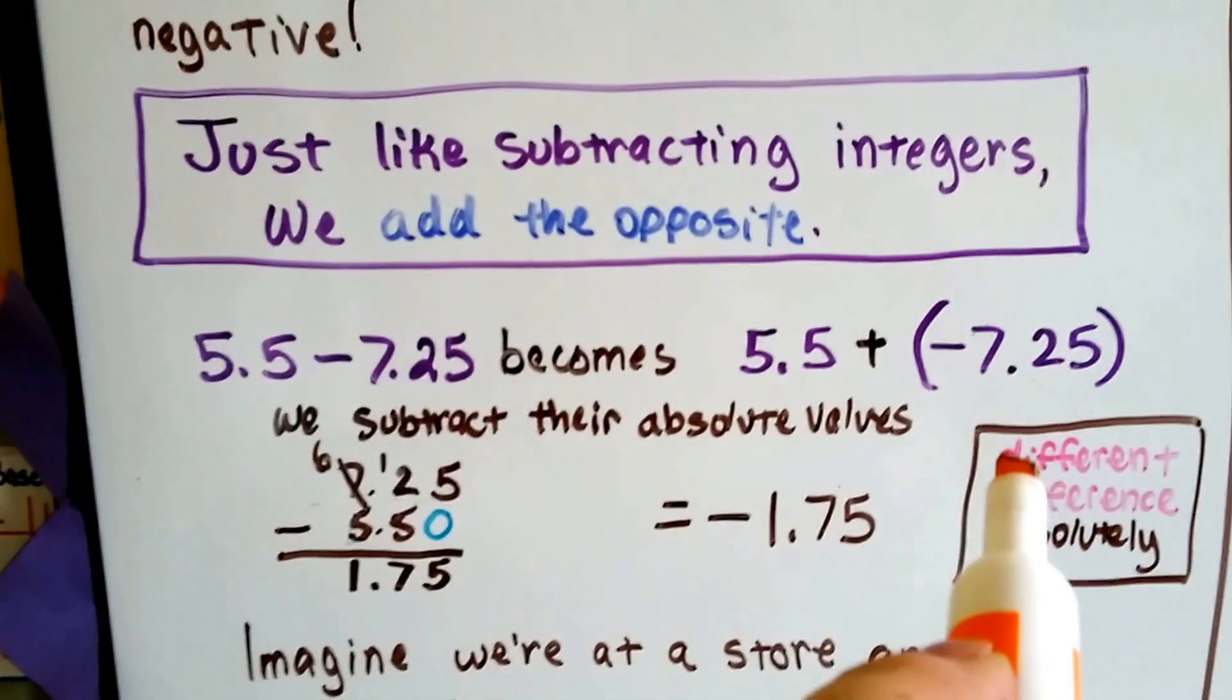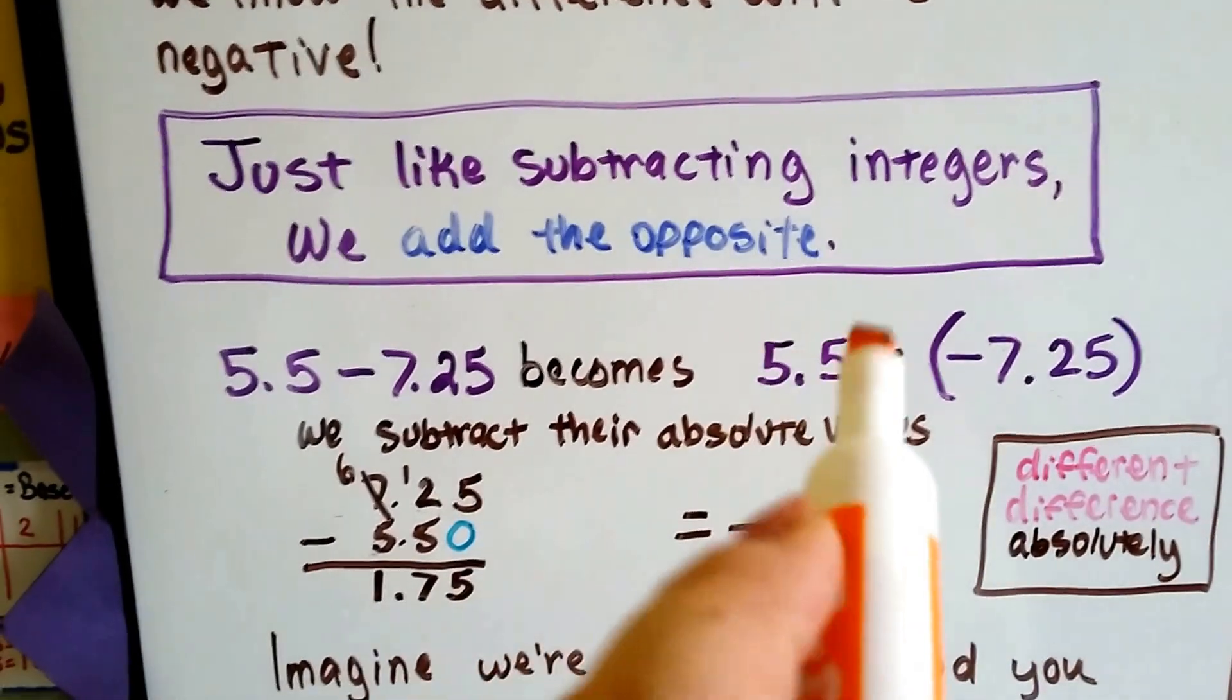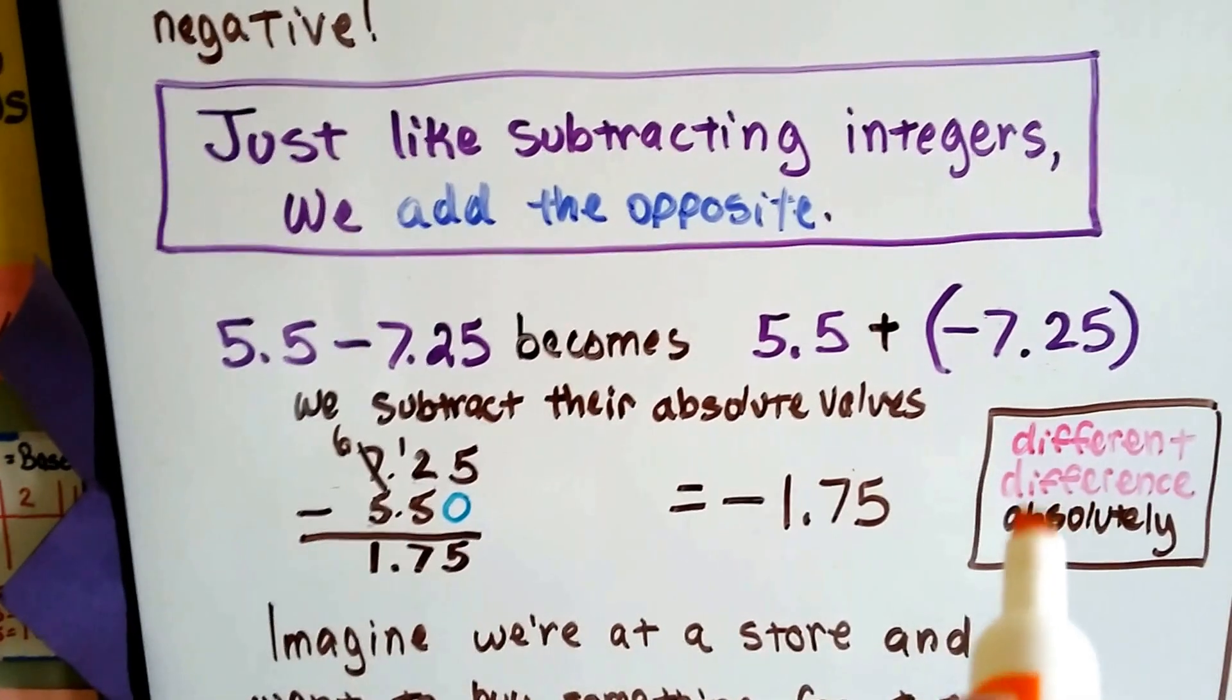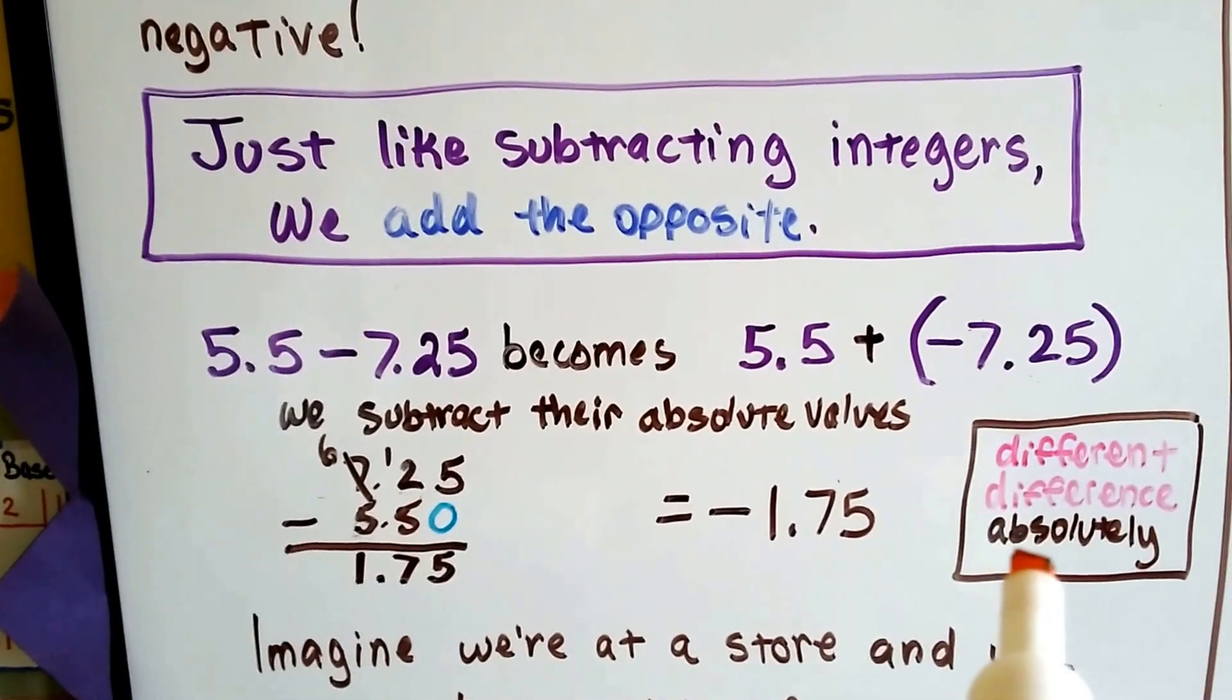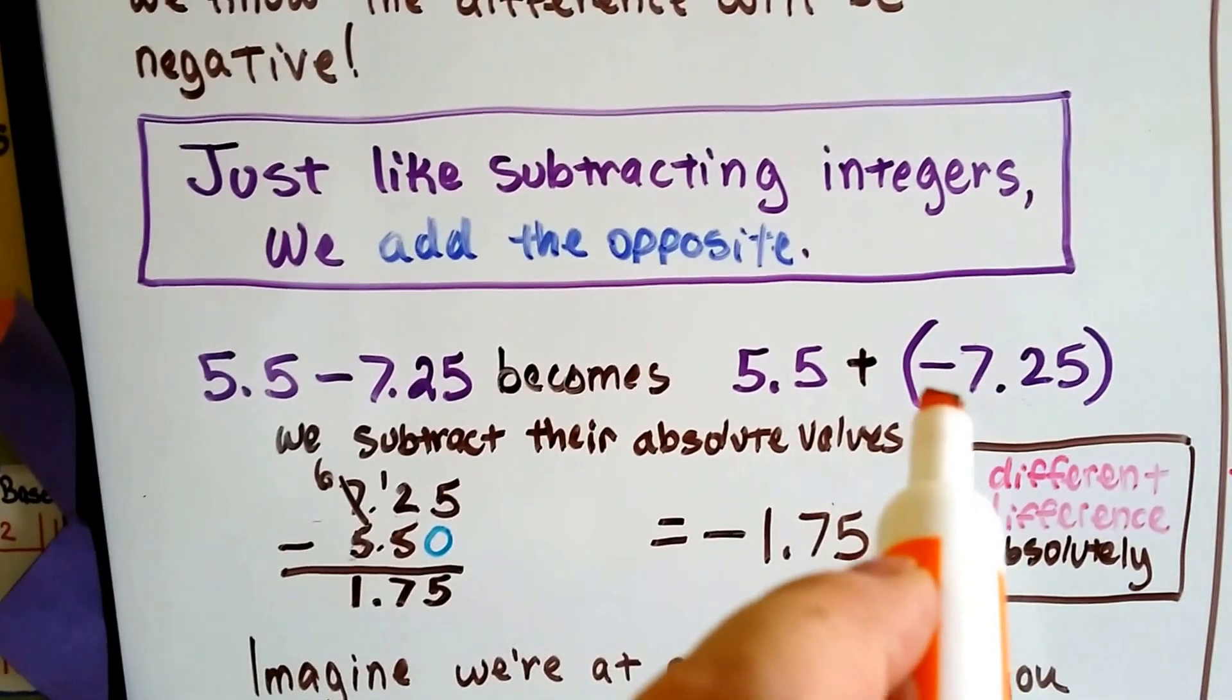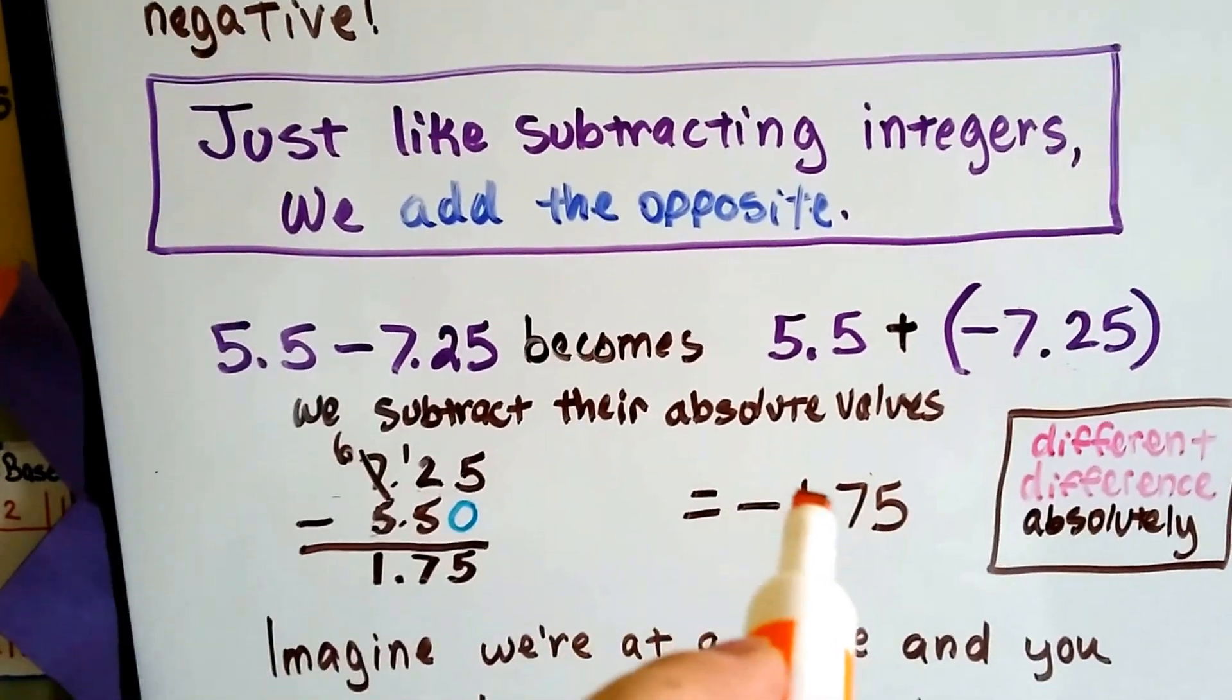We find the difference when the signs are different. This is a negative, that's a positive. So we find the difference between the two of them, and that's 1.75. And we take the sign of the larger absolute value, the one that's farther from 0. So the 7 is farther from 0 than the 5, so we take the negative sign of the 7.25.